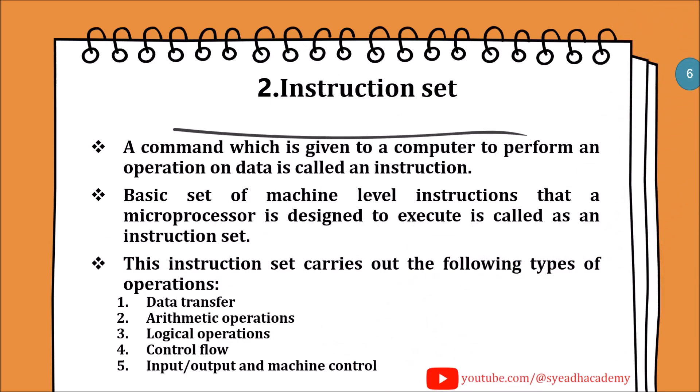Instruction set. A command given to a computer to perform an operation on data is called an instruction. The basic set of machine-level instructions that a microprocessor is designed to execute is called an instruction set. This instruction set carries out the following types of operations: 1. Data transfer, 2. Arithmetic operations, 3. Logical operations, 4. Control flow, 5. Input, output, and machine control.